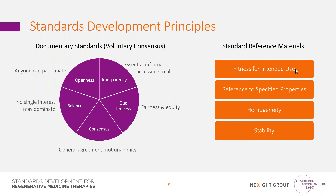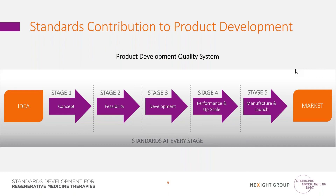Voluntary consensus standards development is guided by principles including openness — where anyone can participate — transparency, due process, consensus, and balance, meaning no single interest dominates. Standard reference materials are developed on the principles of fitness for intended use, reference to specified properties, homogeneity, and stability. Standards should not adversely affect technology development, restrict commerce, or duplicate or conflict with existing standards efforts. From idea generation to final product delivery, standards are important throughout the product development pathway.